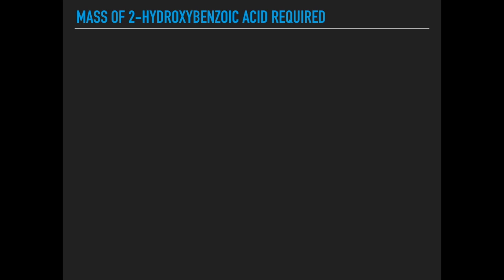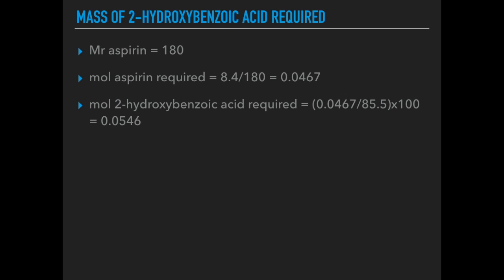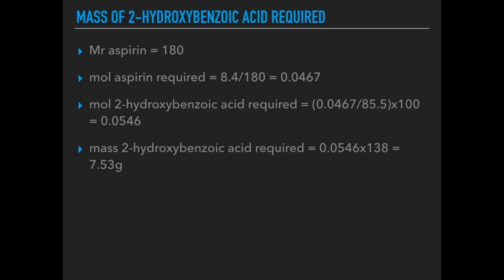We'll start with the mass required of the 2-hydroxybenzoic acid. First, calculate the MR of aspirin, which comes out at 180. Then calculate the moles of aspirin required — we need to make 8.4 grams, so mass over MR gives us that many moles. Remember, it's not 100% yield, so we divide by the percentage yield and multiply by 100 to factor that in. We're going to actually need 0.0546 moles of starting material. Multiplying by its MR of 138 gives us 7.53 grams required.